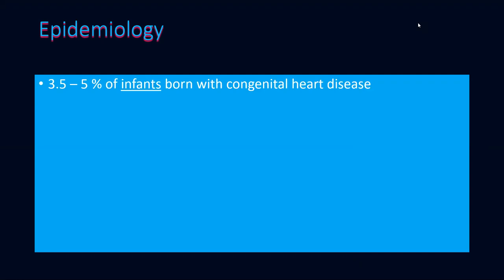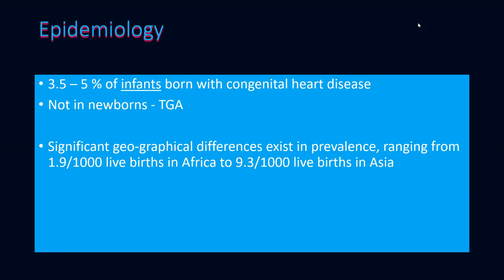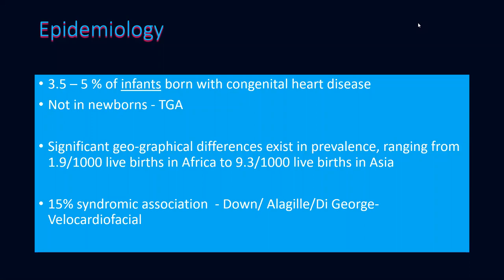Going to the epidemiology: how common is Tetralogy of Fallot? It is seen in 3.5 to 5% of infants born with congenital heart disease — and note it is infants, not newborns. In newborns, the commonest cyanotic congenital heart disease is transposition of great arteries. There are geographical differences in prevalence, ranging from 1.9 to 9.3 per thousand live births, due not only to racial factors but also early screening, fetal screening, fetal termination, and other factors. There is a 15% syndromic association with Down's, Alagille syndrome, and DiGeorge syndrome.